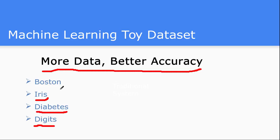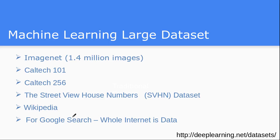For our learning purpose we will start with these simple four datasets: Boston, Iris, Diabetes, and Digits. These are all toy datasets — very tiny kinds of datasets. In actual machine learning systems the datasets are very huge, but we will start here.